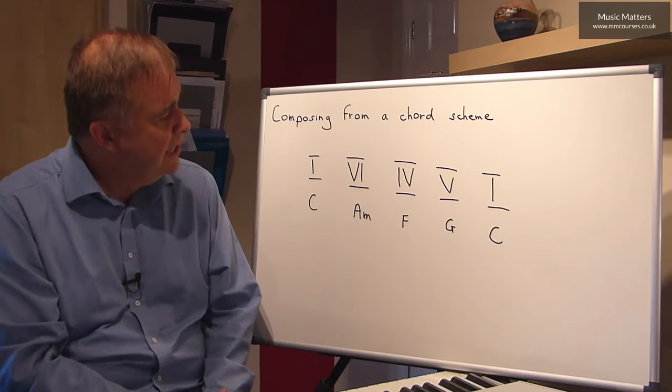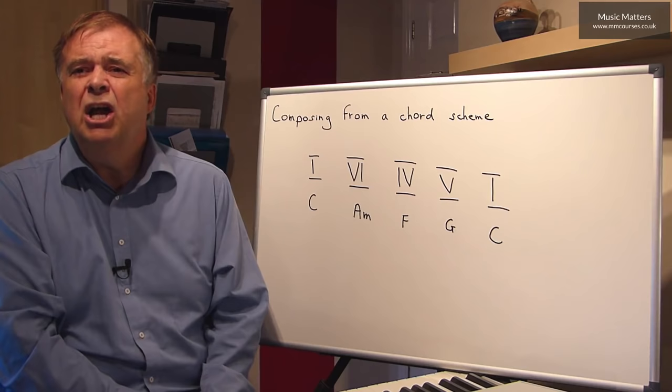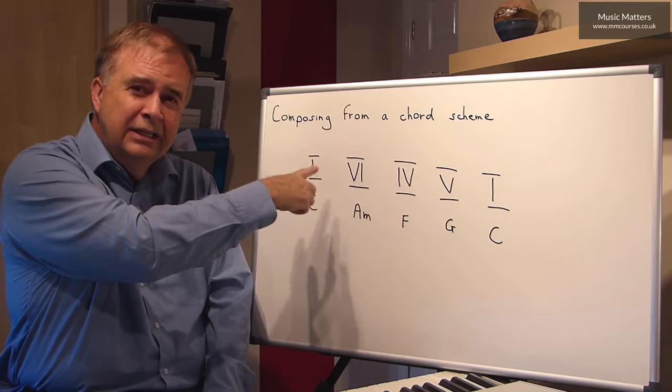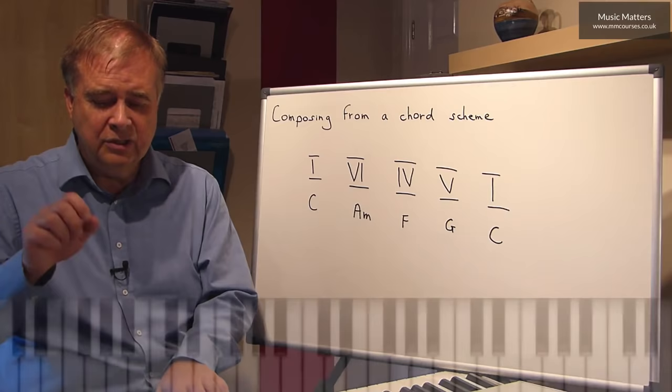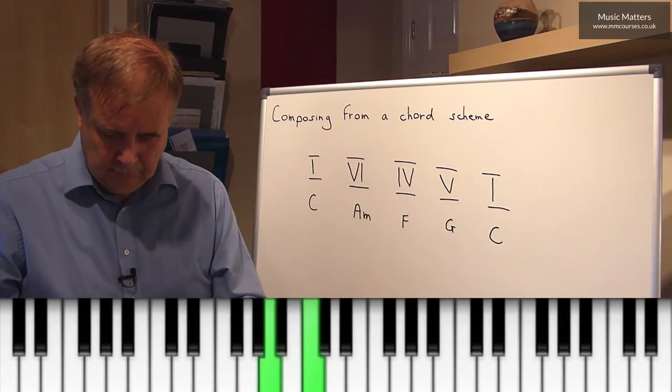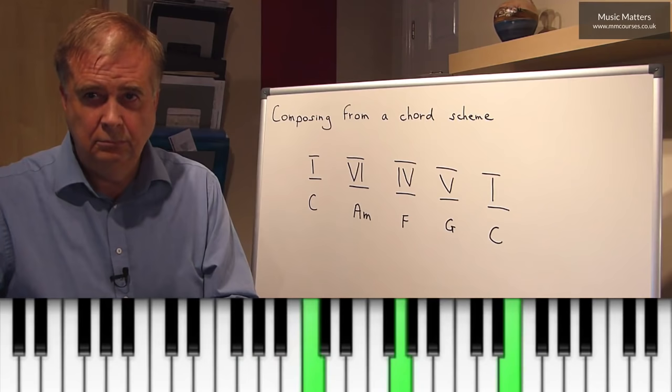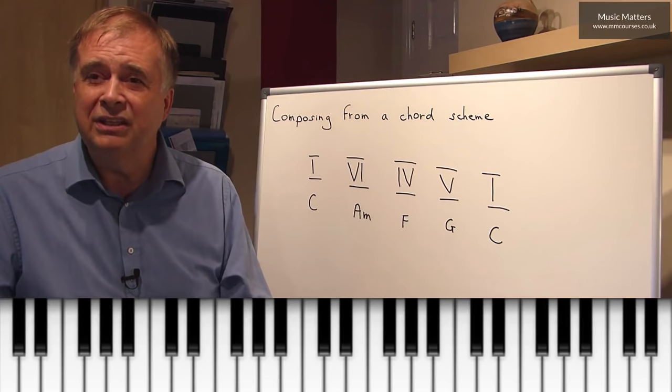So for example, if you wanted to use that scheme and you wanted to write something that maybe sounded like an earlier piece, maybe from Baroque times or something, you could use this bass line and have this sort of chord outline and maybe have a melody in the right hand that's got a few twiddles and trills, ornaments and things, to make it sound a little bit Baroque. So you could do something like this. That's using the same chord scheme, but sounds rather different in that style, doesn't it?